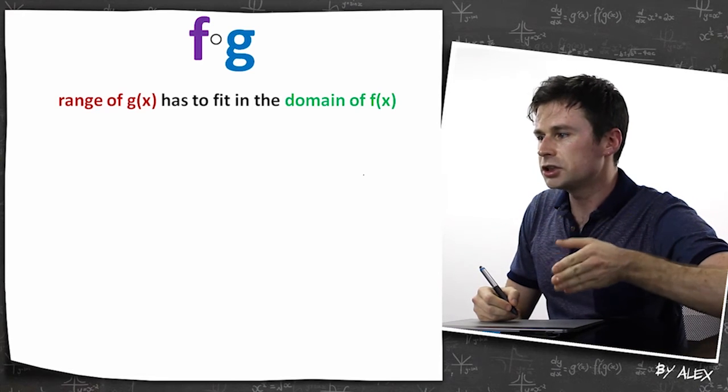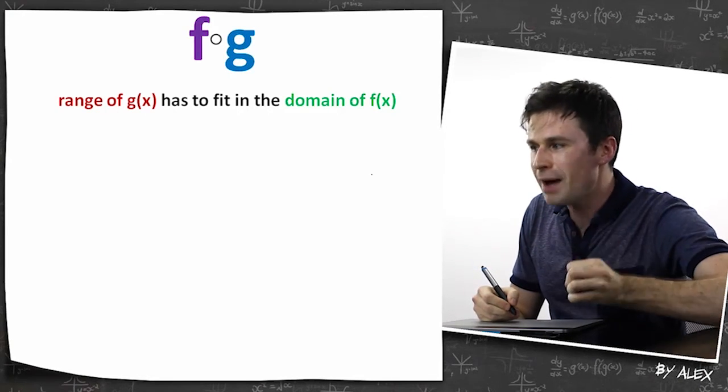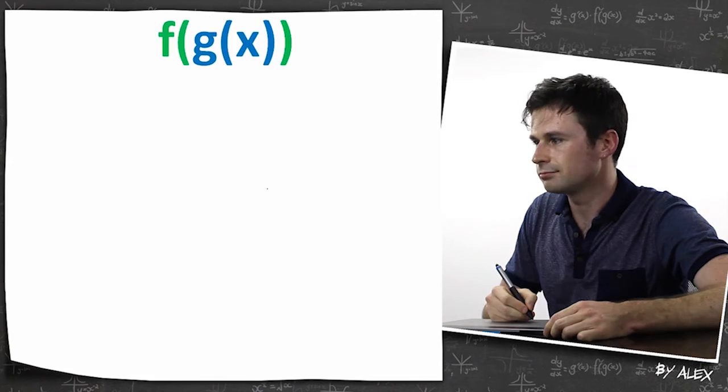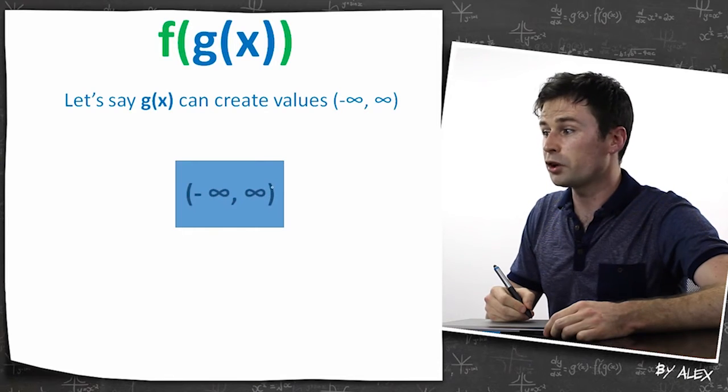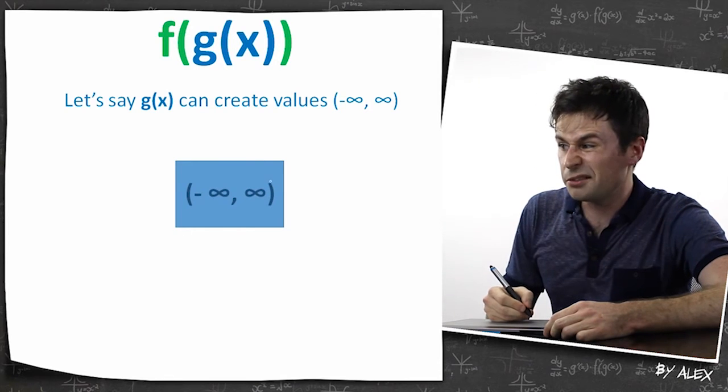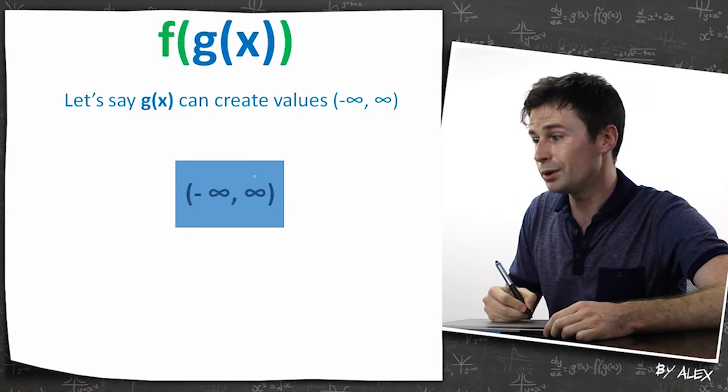And with composition of functions, the range of the inside function has to fit in the domain of the outside function. So if we've got something like this, let's say g of x can create values from negative infinity all the way up to infinity, and that's represented by this little rectangle here.